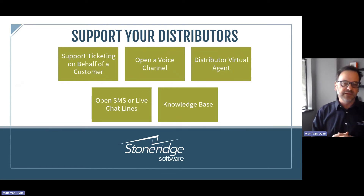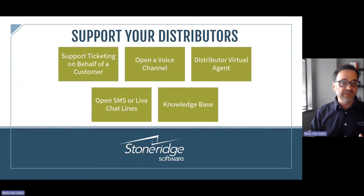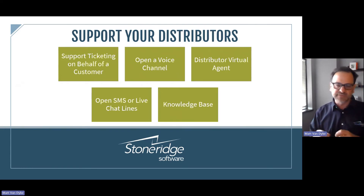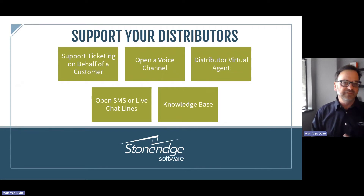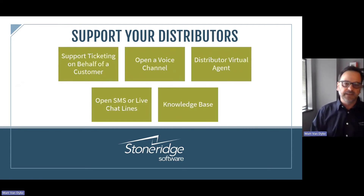You can open a dedicated voice channel for distributors — when they're out on site and need a quick answer about a product to close a deal. Or a virtual agent: with a knowledge base, your virtual agents can learn and become smart about your products, past cases, engineering specs, and so on, serving as a quick-response resource when a support rep isn't available. You can also open SMS or live chat lines — all ways in Dynamics Customer Service Omnichannel to give multiple avenues of support to your distributors.